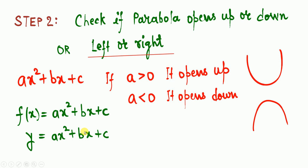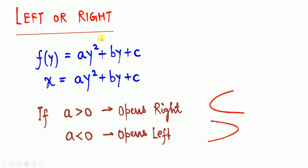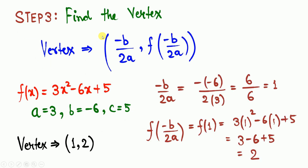For a function of y, f(y) = ay² + by + c, if a > 0 the parabola opens to the right, and if a < 0 it opens to the left. For our example f(x) = 3x² − 6x + 5, since it is a function of x and a = 3 > 0, the parabola opens upward.